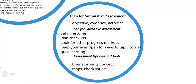Plan for a summative assessment using three elements: objective, evidence, and activities. The objective is what the students will learn — what they're going to get out of the project. The evidence is what they need to demonstrate to show that they learned it. And the activities are what approaches they might take to go from not knowing to knowing. These all go together: when you have the vision, what will get them there and how will they demonstrate that they learned it?